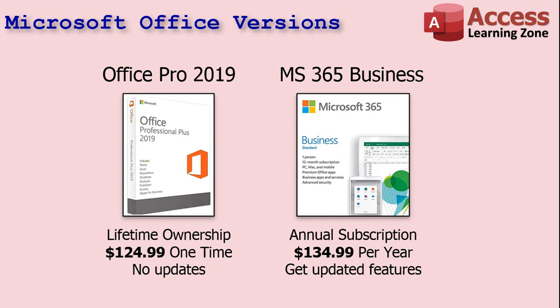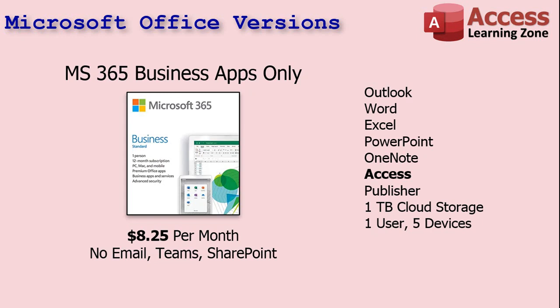Especially as a business, you can just budget that into your monthly budget. Now there is even a cheaper version of Microsoft 365 available — it's called Business Apps Only. It's kind of hard to find on their website, but I'll put a link down below. It's only $8.25 per month, and that's one user with up to five devices. You get one terabyte of cloud storage and you get all the basic Microsoft Office apps: Outlook, Word, Excel, PowerPoint, OneNote, Access, and Publisher. With this version you don't get email service, you don't get Microsoft Teams, and you don't get SharePoint — but most people don't use those anyway. This is the version of Microsoft Office that I have — a 365 Business Apps Only subscription. I use Gmail for my email most of the time, and I never use Teams and rarely use SharePoint.